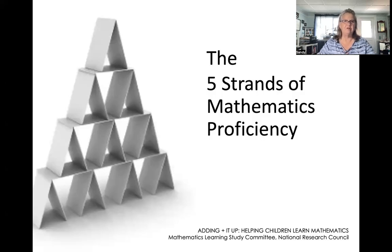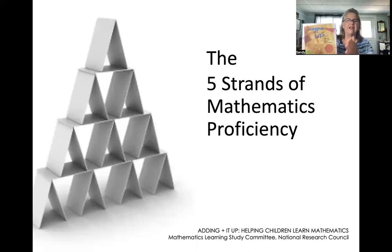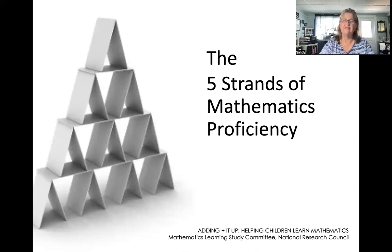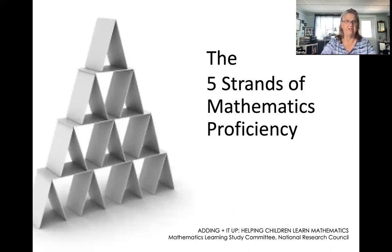In 2001, the National Research Council Math Learning Studies Committee published a book called Adding It Up: Helping Children Learn Math. You can see it's quite a thick publication. If you'd like more information about that, I'll try to leave a link to a free PDF that you can get. In this publication, they identify five strands of math proficiency.